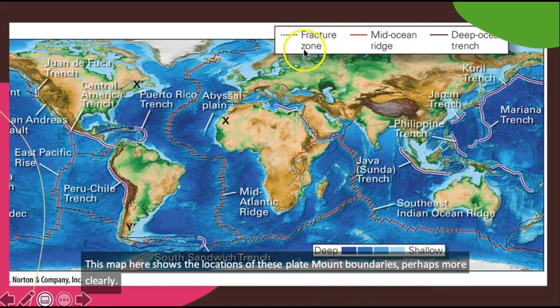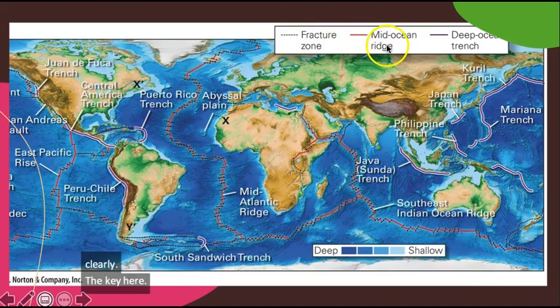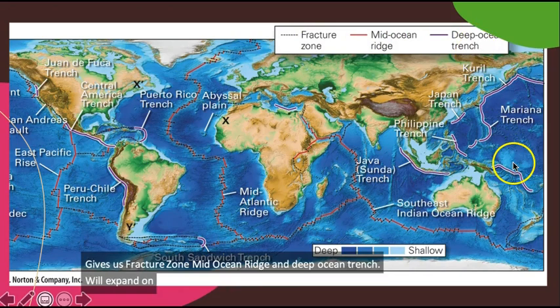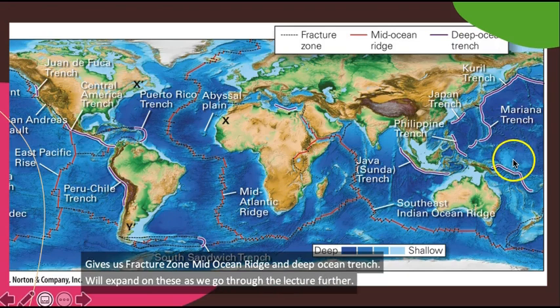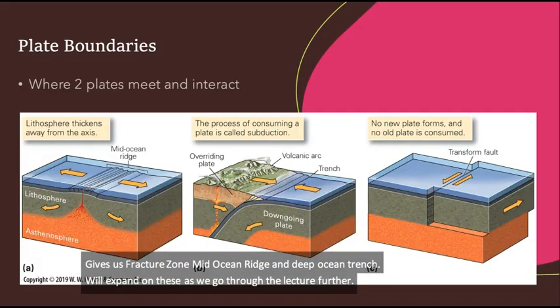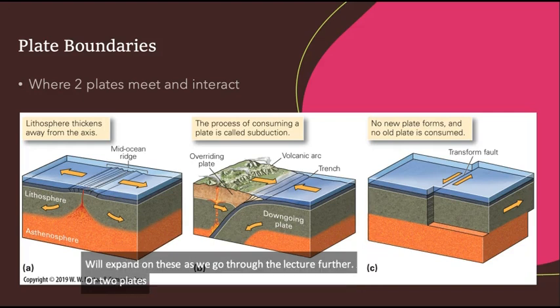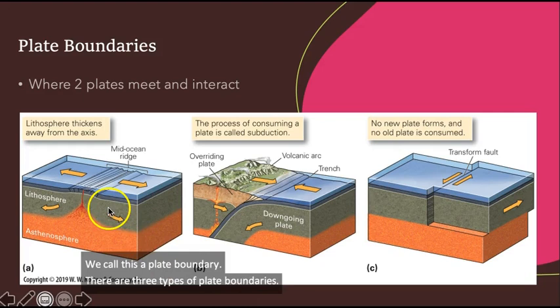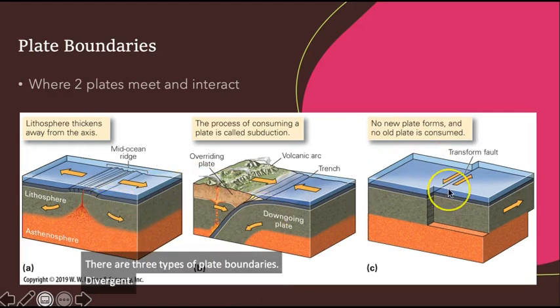The key here gives us fracture zone, mid-ocean ridge, and deep ocean trench. We'll expand on these as we go through the lecture further. Where two plates meet and interact, we call this a plate boundary. There are three types of plate boundaries: divergent, convergent, and transform.